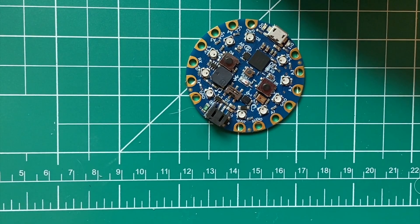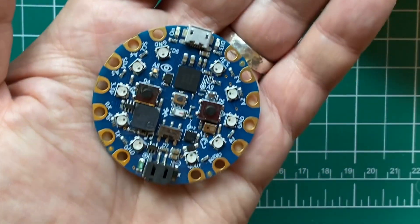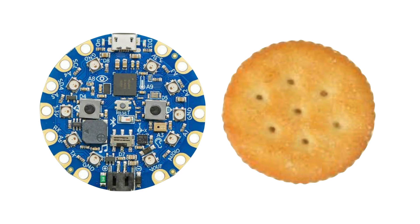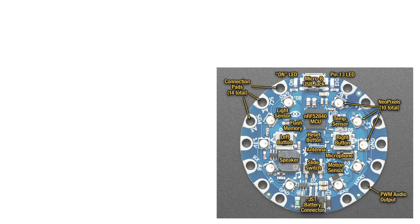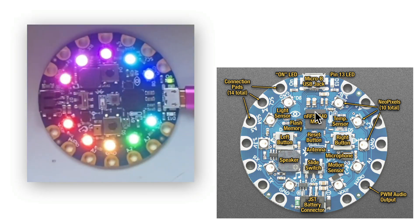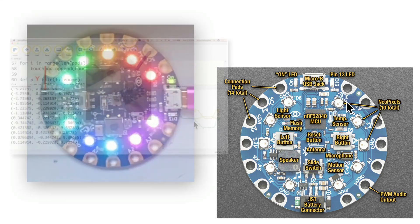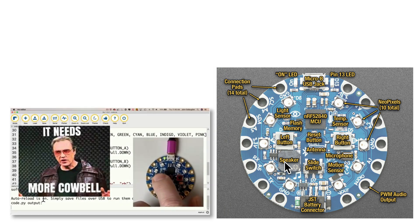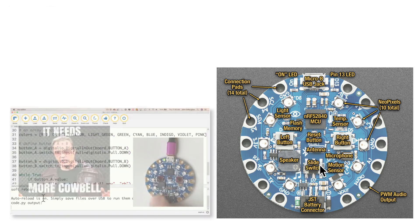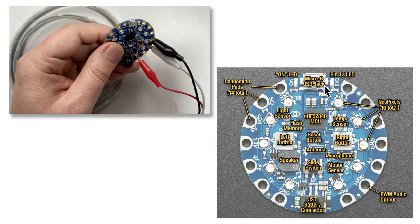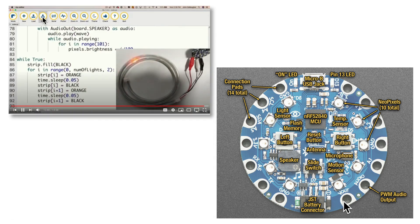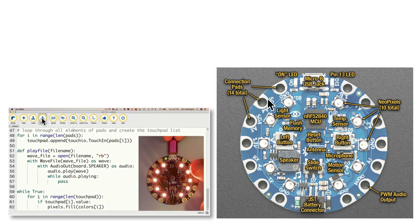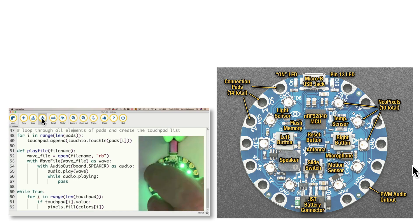Now I use two boards in this course. We start out with a $25 Circuit Playground Bluefruit by Adafruit, sometimes referred to as the CPB. It's about the size of a Ritz cracker, and it's a great first board because it's packed with features including 10 individually controllable multicolored LED lights, a motion sensor, a light sensor, a temperature sensor, a speaker, two buttons, a slide switch, and 14 connection pads so you can expand the board with add-ons using simple alligator clips and avoid soldering or breaking out the breadboard. Seven of these pads support capacitive touch, meaning you can write code to react when you've touched them.